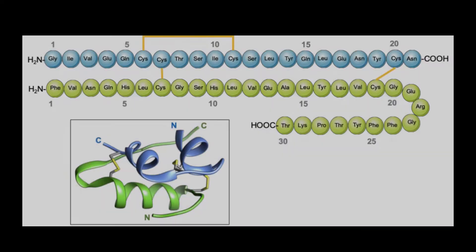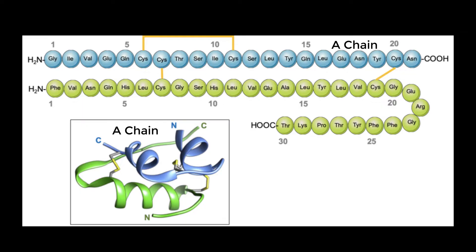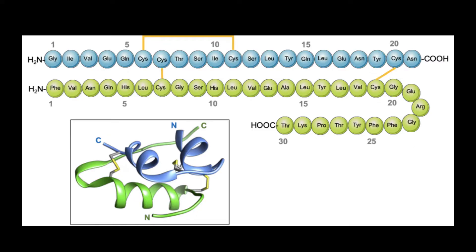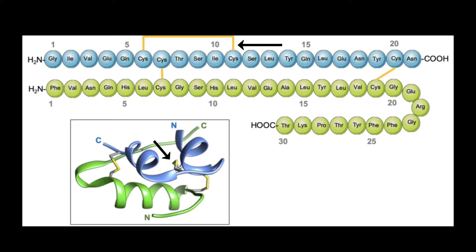Insulin is composed of two protein chains. The shorter one, called the A chain, has 21 amino acids, while the longer one, the B chain, has 30 amino acids. The A and B chains are covalently linked together by two disulfide bridges, and an additional disulfide bond exists between two cysteines within the A chain.